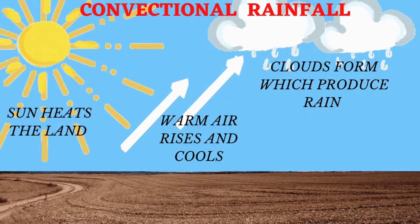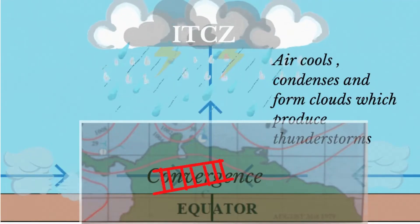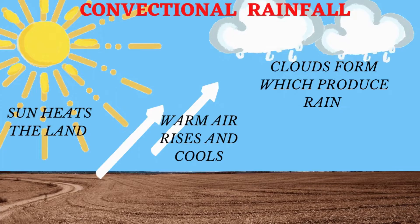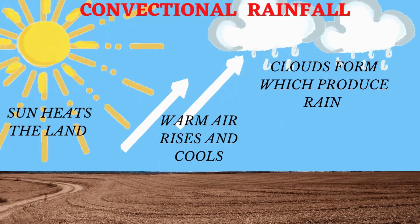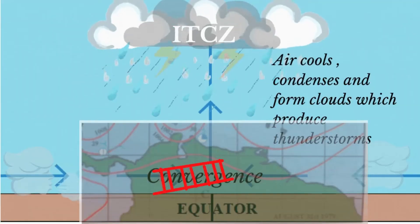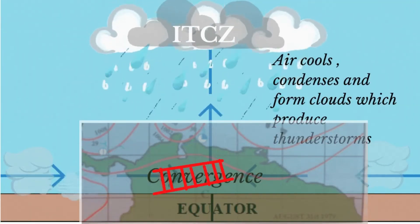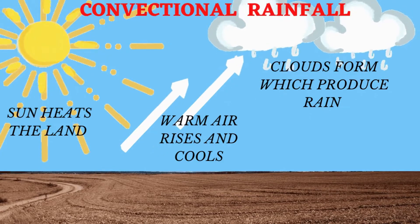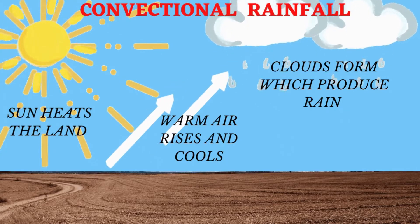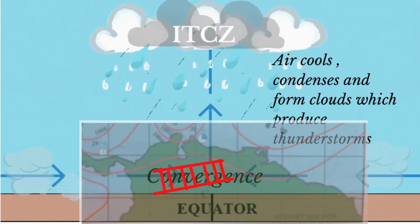Equatorial areas have no distinct dry season since rainfall occurs throughout the year. The main type of rainfall is convectional and is largely produced and increased by the influence of the ITCZ.